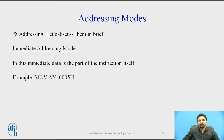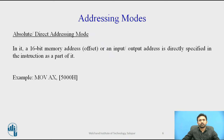An example is: MOV X, 0005H. The next one is direct addressing mode, also called absolute addressing mode, which moves a byte or word between a memory location and a register. Here the data is in some memory location and the address of the data in memory comes immediately after the instruction. The address is the offset address. A 16-bit memory address or I/O address is directly specified in the instruction as part of it. For example, you can move data into a register from the direct address 5000H.